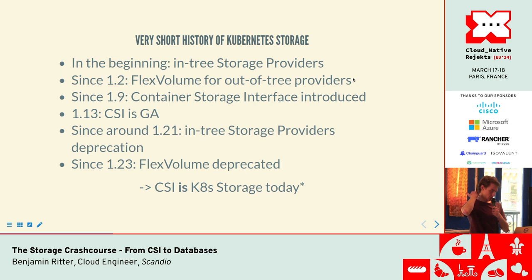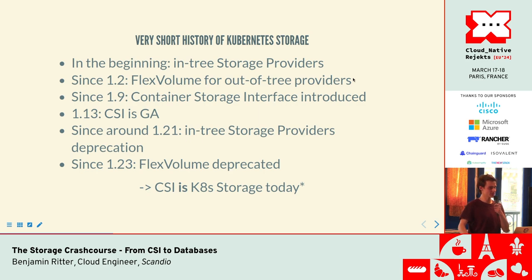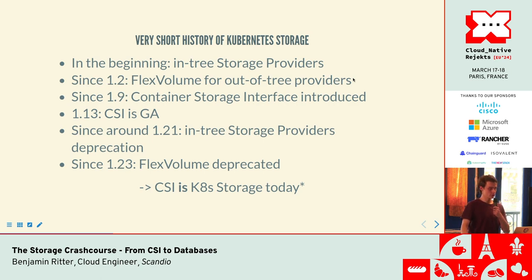How did we get here? There was a time where every storage provider in Kubernetes was in-tree, which basically meant if you had a storage solution and wanted to use it in Kubernetes, you had two options: get it upstream, or use it for Kubernetes — neither sounded fun. One came with continued maintenance, the other with a six-week release window. So there was something called Flex Volumes, the first iteration for out-of-tree storage providers. I have never used them — I've been in the industry for four years. Then CSI was introduced and became GA. Then the in-tree storage providers were deprecated. Long story short, CSI is the only thing today.